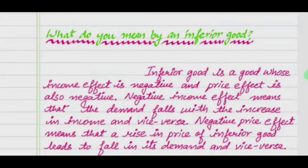What do you mean by an inferior good? Inferior good is a good whose income effect is negative and price effect is also negative. Negative income effect means that the demand falls with the increase in income and vice versa. Negative price effect means that a rise in price of inferior good leads to fall in its demand and vice versa.